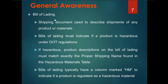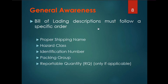Bill of Lading: a shipping document used to describe the shipment of any product or material. The Bill of Lading must indicate if the product is regulated as hazardous materials under DOT regulations. If hazardous, the product description on the Bill of Lading must match exactly the proper shipping name found in the hazardous materials table. The Bill of Lading typically has the common mark 'HM' to indicate if the product is regulated as a hazardous material. The Bill of Lading description must follow a specific order: proper shipping name, hazardous class, identification numbers, and packing group.